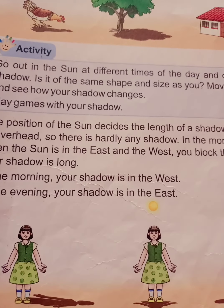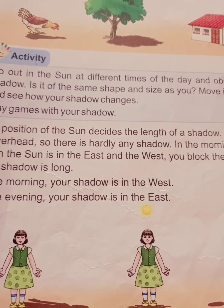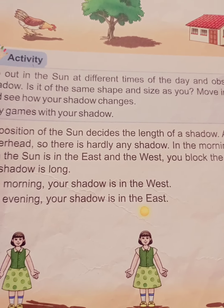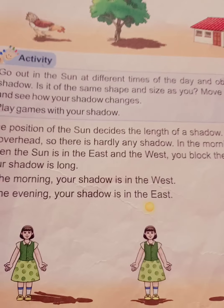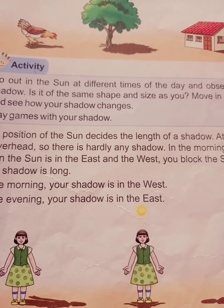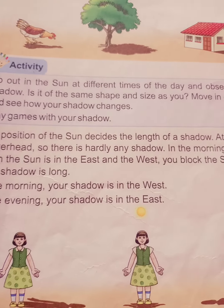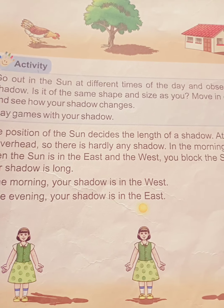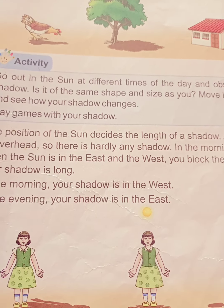At night we can see objects by using man-made sources such as bulbs, tube lights, and candles. We take the help of man-made features at night. So the sun is also called a cause of shadow.